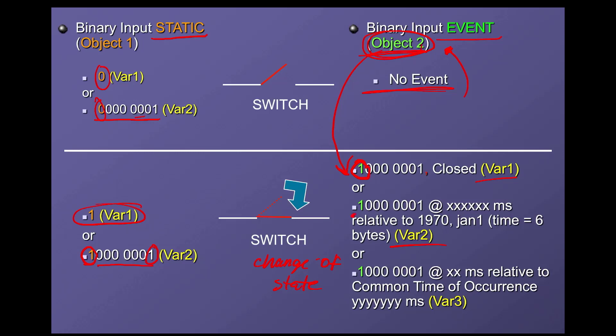Object 2 variation 2 says we have an event recorded at a specific time. DNP3 uses six bytes counting milliseconds from January 1st, 1970 — that's 48 bits of milliseconds. So it's essentially a synchronized time starting January 1st, 1970 and counting up in milliseconds. When it comes to variation 3, this is something called CTO — common time of occurrence. CTO is a time that can be sent out over the network as a broadcast message to essentially synchronize all the clocks within your network, so all RTUs are synchronized to that same CTO time.